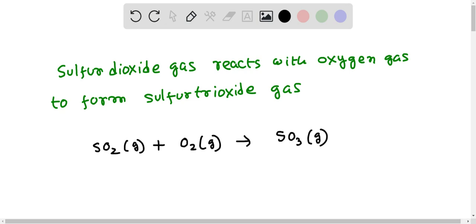So let's place two here. In that way we have six oxygen atoms and two sulfur atoms on the product side. So to balance the sulfur atom let's place two here.